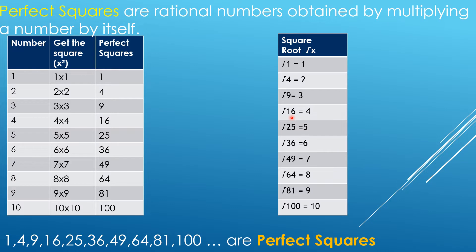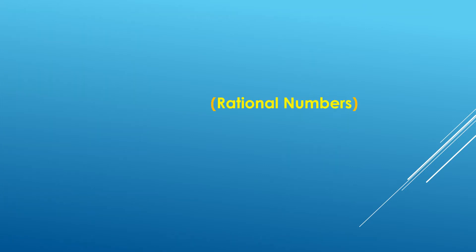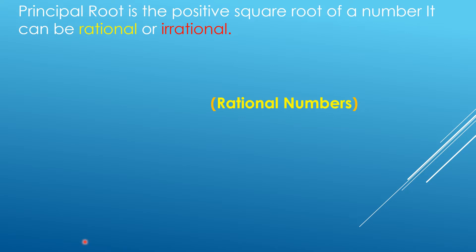So now, you're asking for the square root, which means that you're looking for the number that, if we're going to multiply it by itself, the result is the number inside the radical sign. We're going to focus on the positive square root, or what we call principal root. The principal root is the positive square root of a number, and it can be rational or irrational numbers.